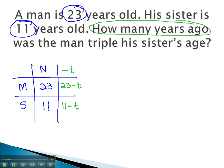Now, we can make an equation. We want the man to be triple his sister's age. The man will be, or equal, triple three times his sister.